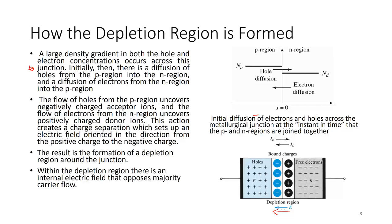The direction of the electric field is from the positive donor ions on the N-side to the negatively charged acceptor ions on the P-side. Within the depletion region, there is an internal electric field that opposes majority current flow. Holes would want to diffuse from P to N, but the electric field opposes this — as a resultant, there is no current flow across the depletion region.